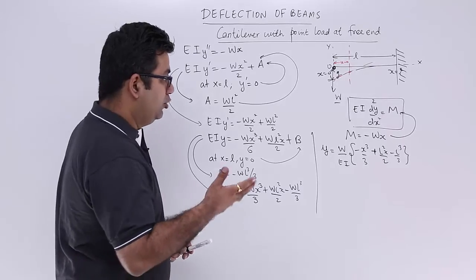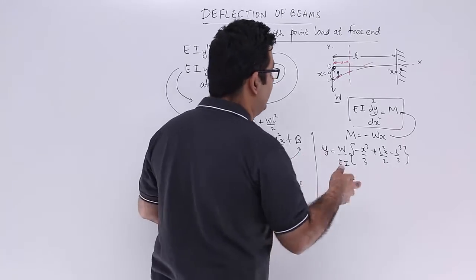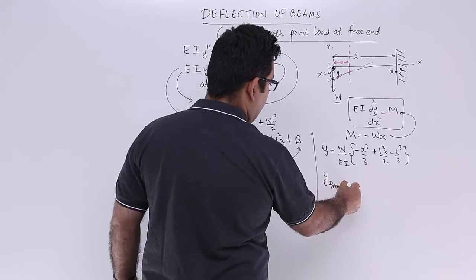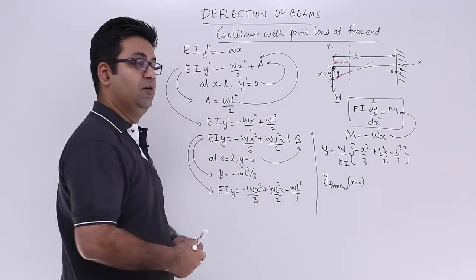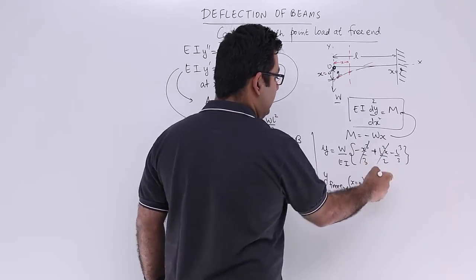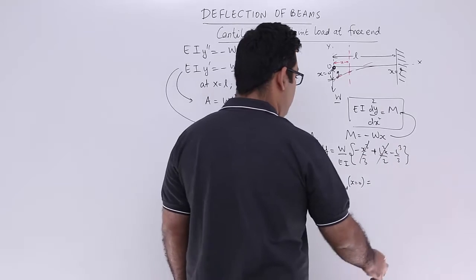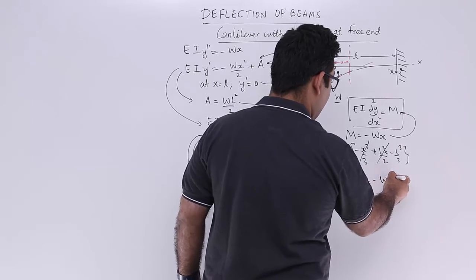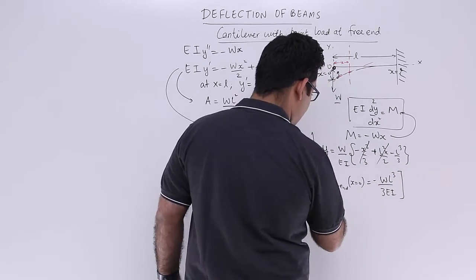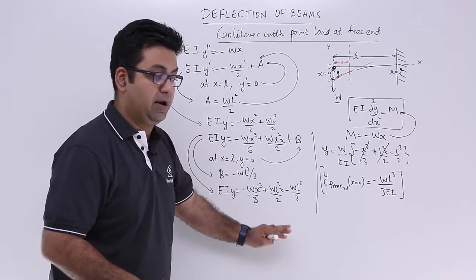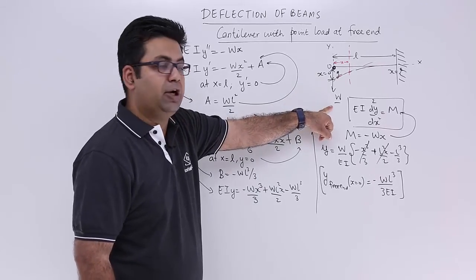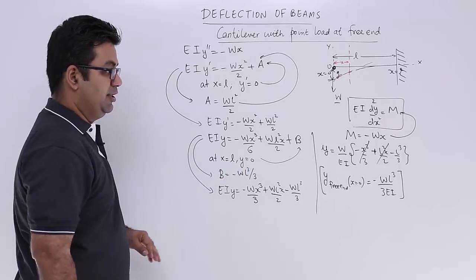The maximum deflection occurs at the free end where x equals 0. When x equals 0, the first two terms vanish, and we are left with y equals minus WL³ upon 3EI. This is the expression you need to understand and remember for the deflection at the free end of a cantilever acted upon by a point load at its free end.